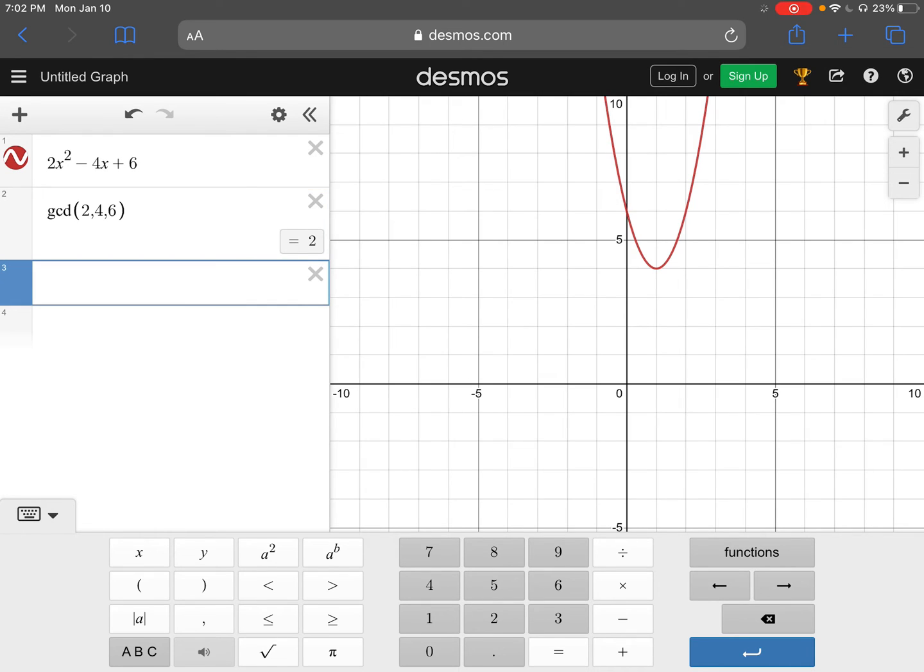Let's try another one. What if we had 18x² + 24x + 48?